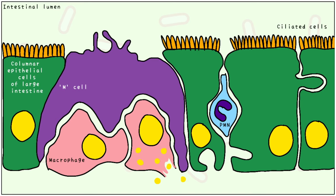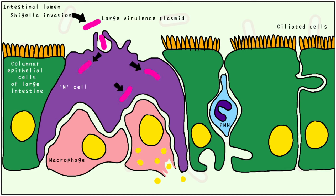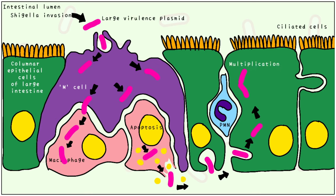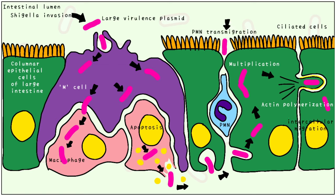Shigella usually invades the mucosa of the large intestine, gaining entry through M cells. This is mediated by a large virulence plasmid, which means that Shigella possesses many proteins that aid in its entry. It spreads through macrophages, which undergo apoptosis to spill out the bacteria. They enter the cells through junctional complexes, where they multiply. Shigella is non-motile, so it requires the assistance of actin to spread from cell to cell. It slides along actin stress cables, where it causes polymerization of the host cells.